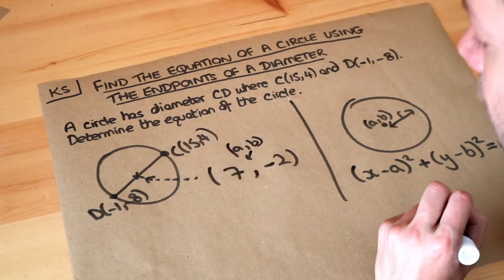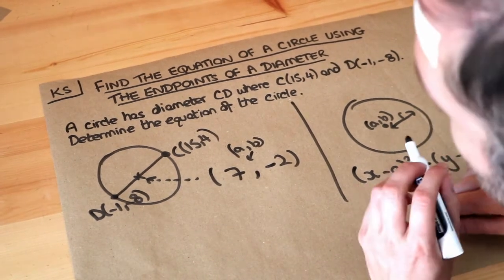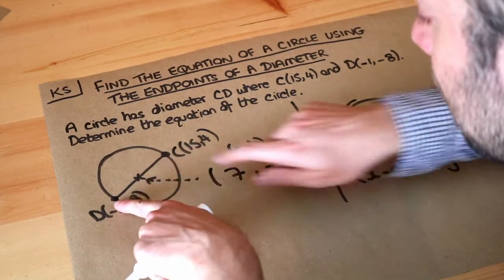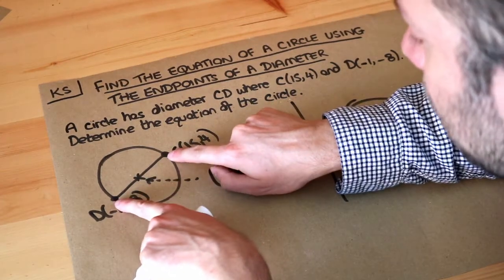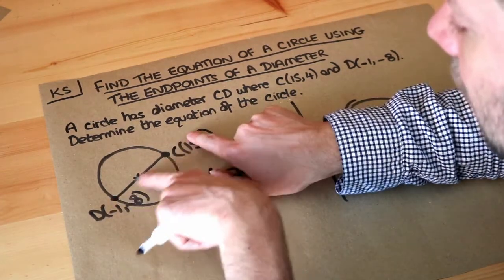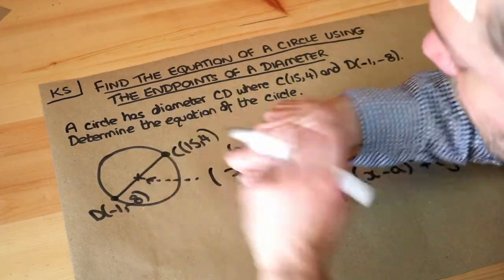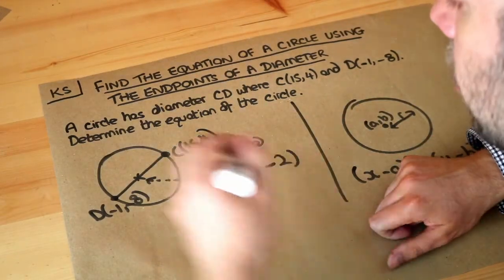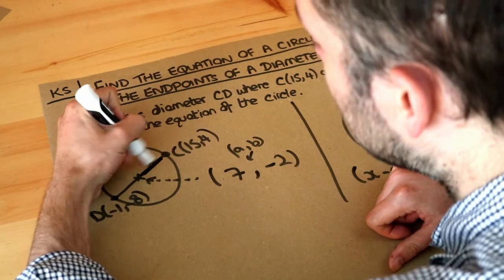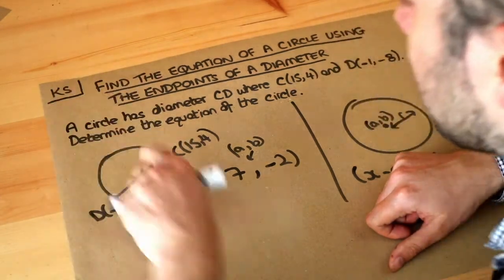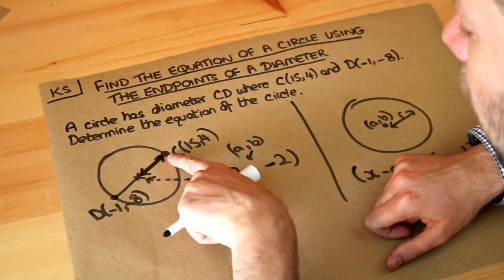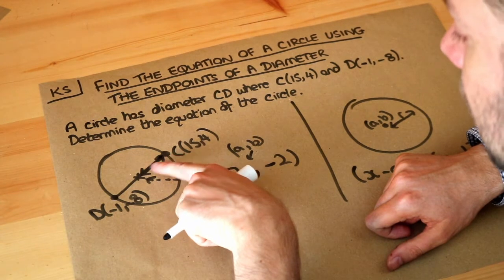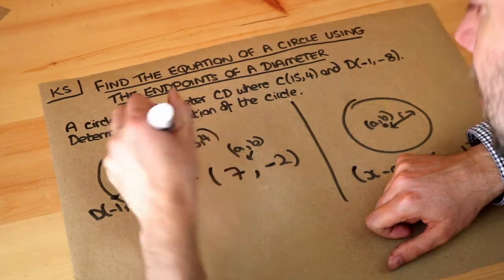And then we also need the radius of the circle. Now there's two ways of doing this. You could either find the distance between these two points, the endpoints of diameter, and if you've got the length of the diameter, you could halve it to get the length of the radius. Or you can just directly find the distance between the center of the circle and one of the endpoints of the diameter. So from here to here, that is the radius of the circle, isn't it?